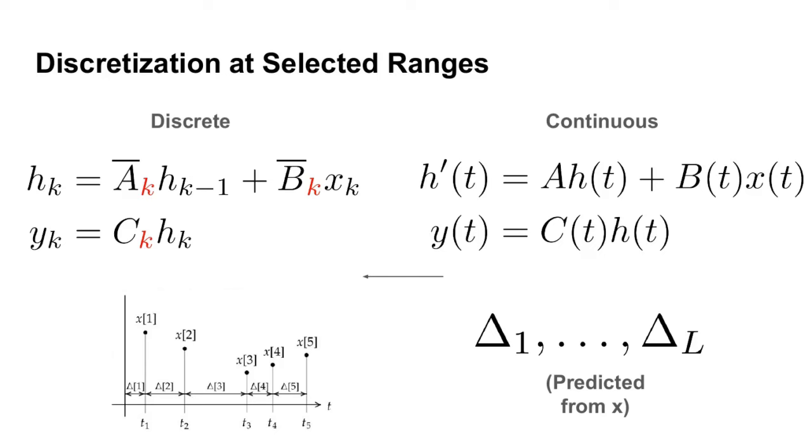Of course, we don't actually know the distance between words in continuous space, so we're going to predict these values delta from the input x. Once we have these delta values, we'll be able to convert from our continuous time representation into a discrete time LTV representation that we are used to.